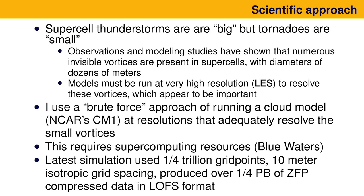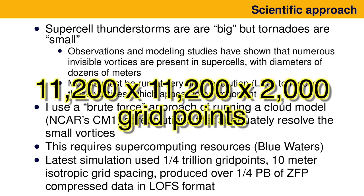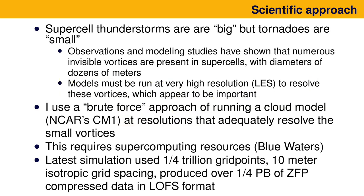For those thinking in climate terms, this simulation has a quarter trillion grid points—something like 2,100 by 2,000 grid points at 10-meter isotropic resolution. I'm not using any stretched grid. This was one of those cases where I just wanted to throw all the resources I could at the storm.